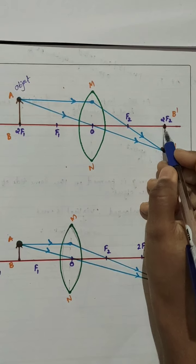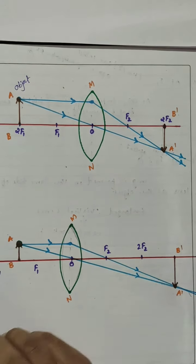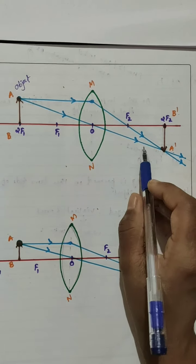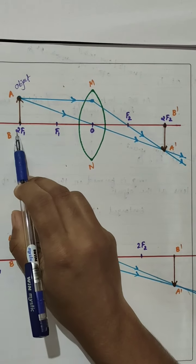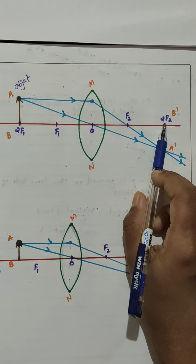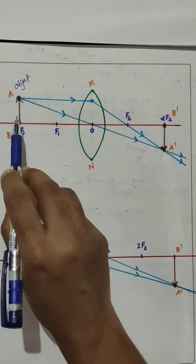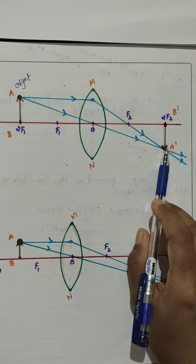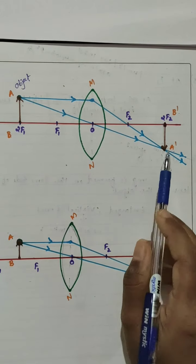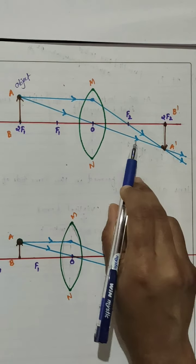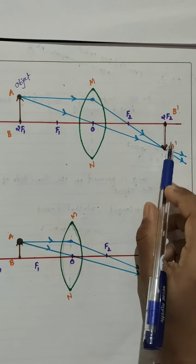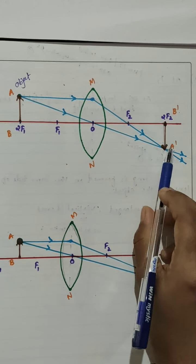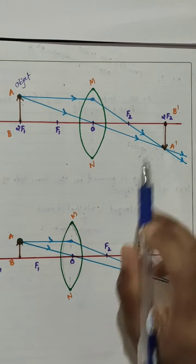We get image A dash B dash. The characteristics: the image is formed at 2F2. Both the object and the image have the same size — you can measure it while drawing the diagram. Actual intersection of rays takes place, so it is a real image, and it is an inverted image.